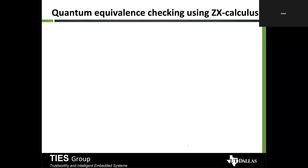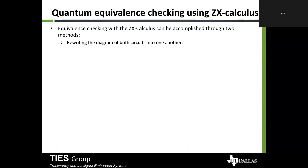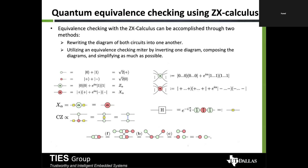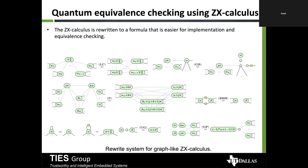Equivalence checking with ZX calculus can be approached through two methods: first, by rewriting the diagram of both circuits into one another; second, by inverting one diagram, composing the diagrams, and simplifying as much as possible. In ZX calculus notation, Z gates are written as green circles, X gates as red circles, and Hadamard gates as yellow boxes. There are specific rewriting rules — called the F, B, and C rules — which when applied reduce the diagrams until only wires remain, proving equivalence.